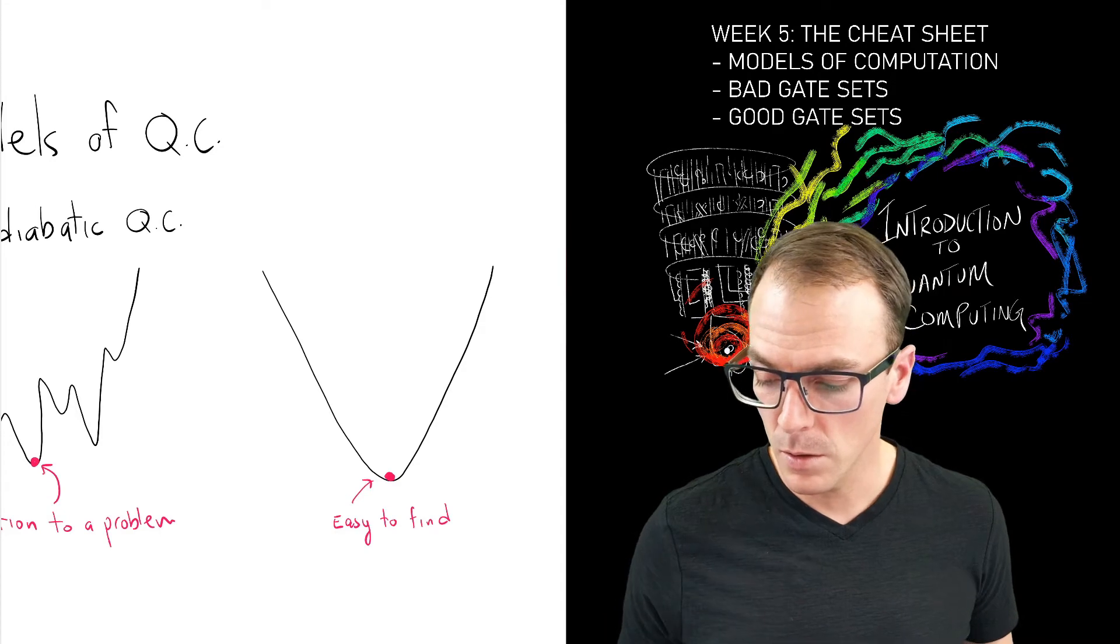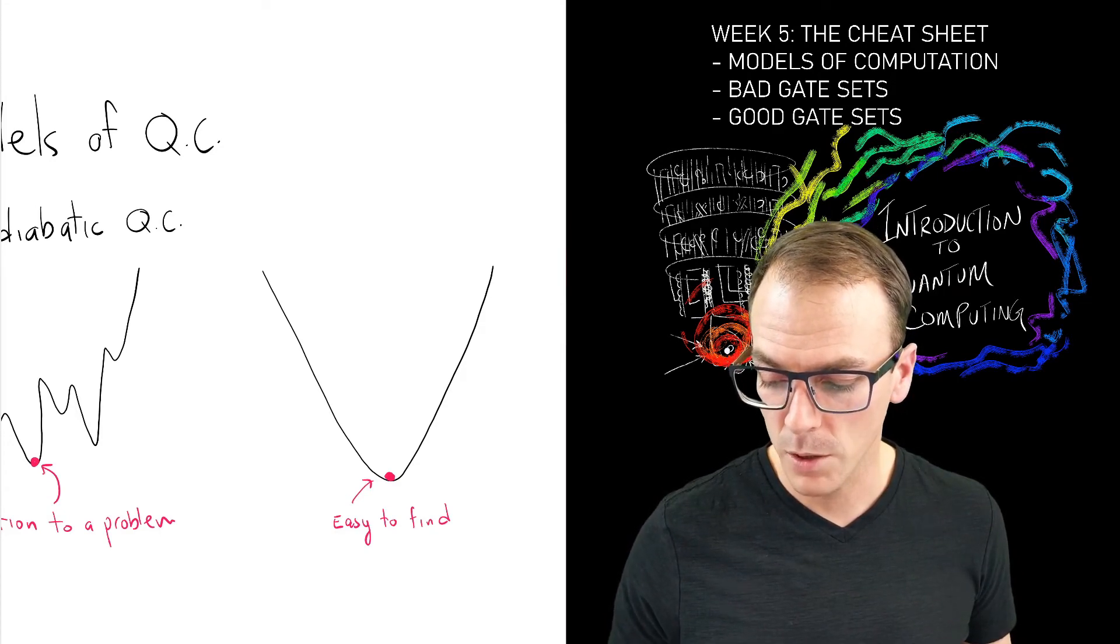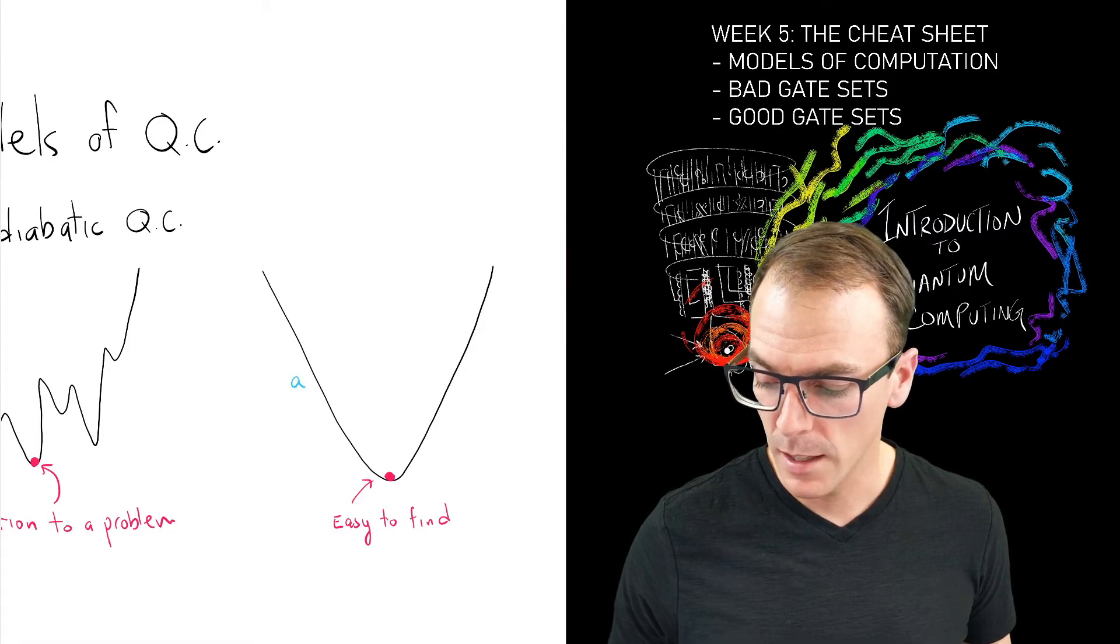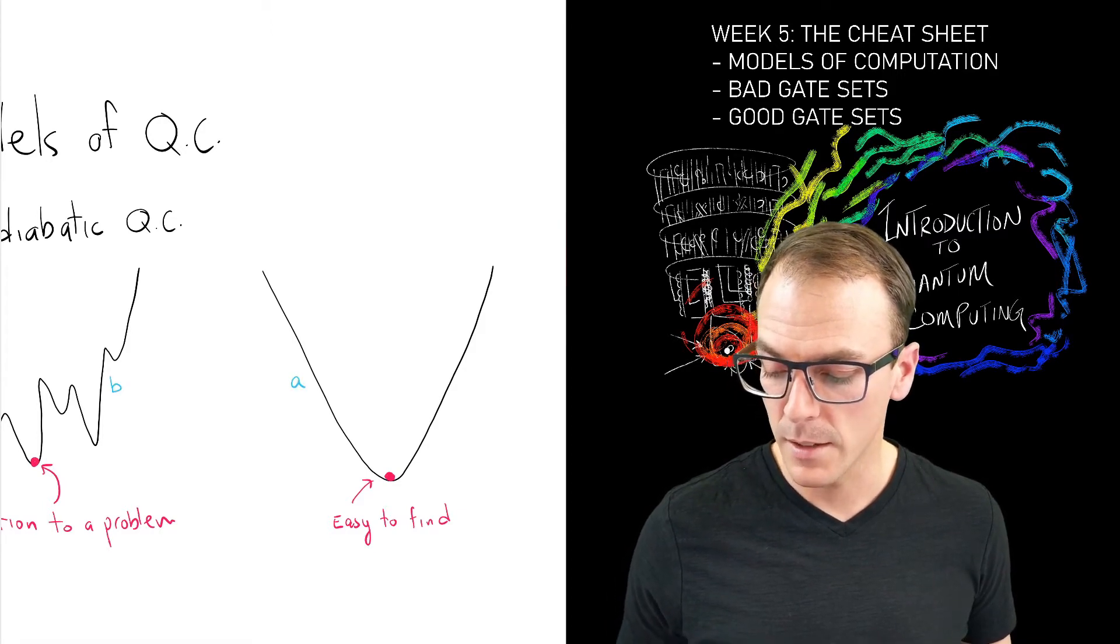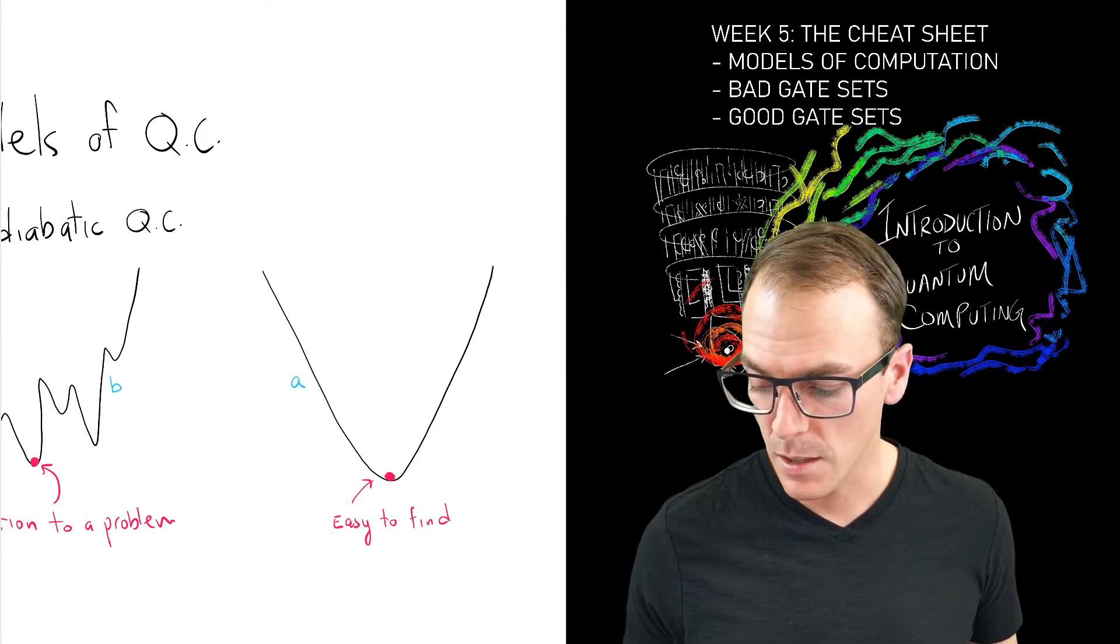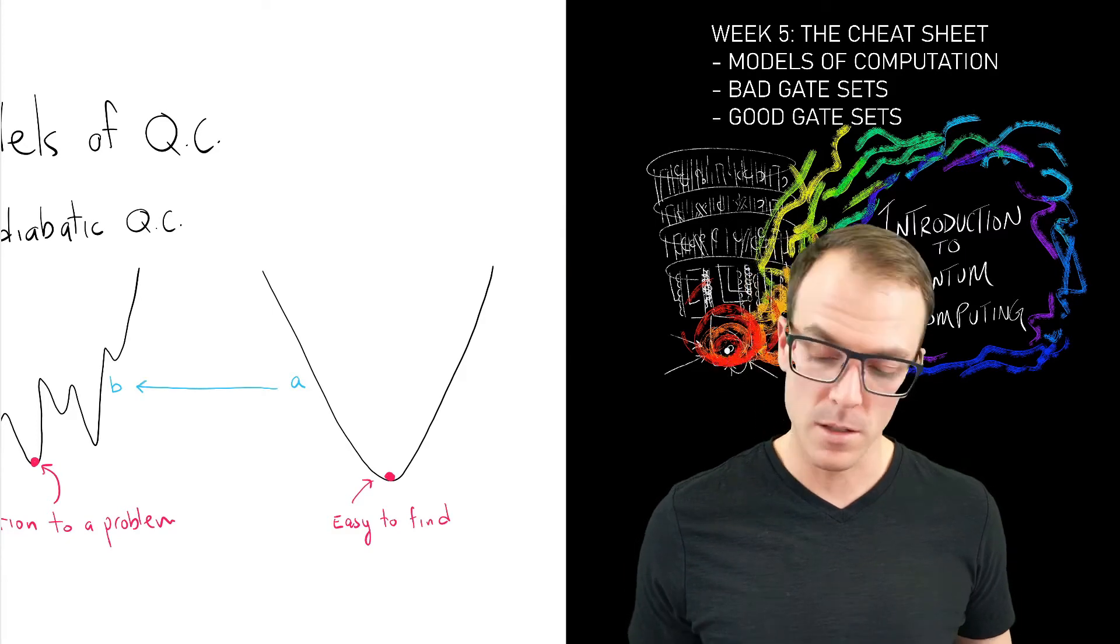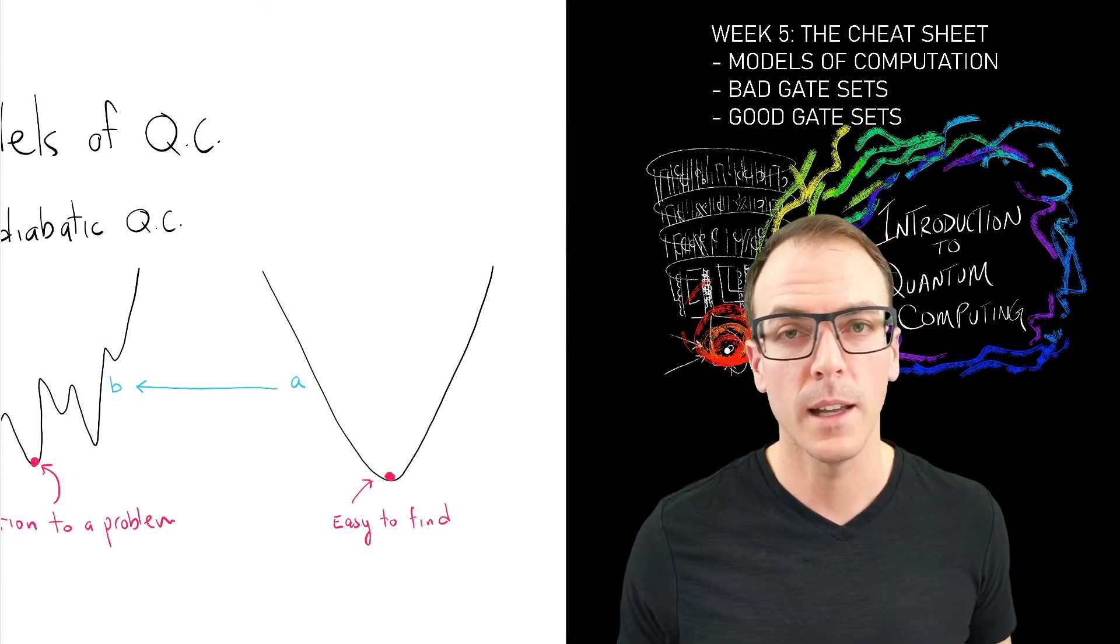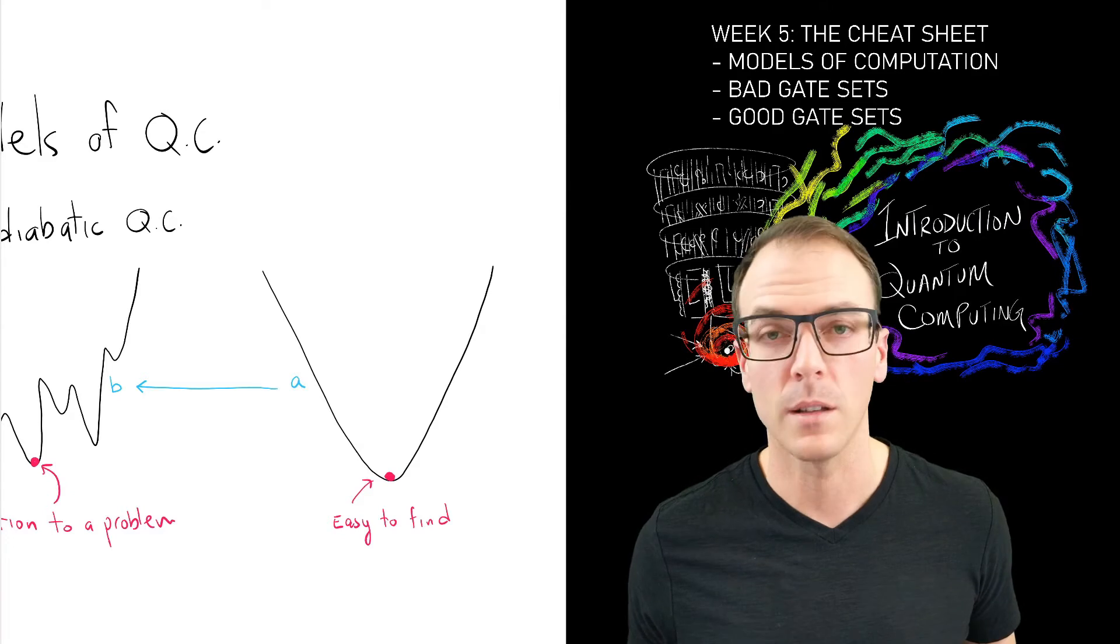What I can do is I can say multiply this function by a and this function over here by b, and slowly increase a and decrease b, so that the function I'm optimizing starts at the one on the right and ends up being the one on the left.